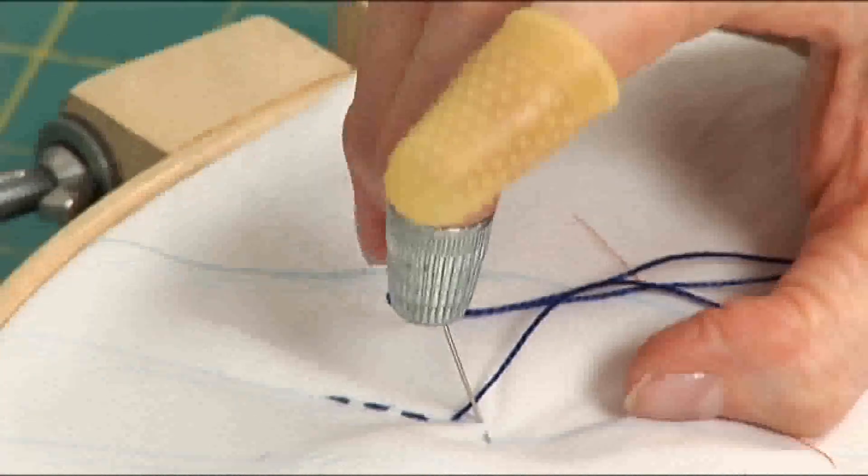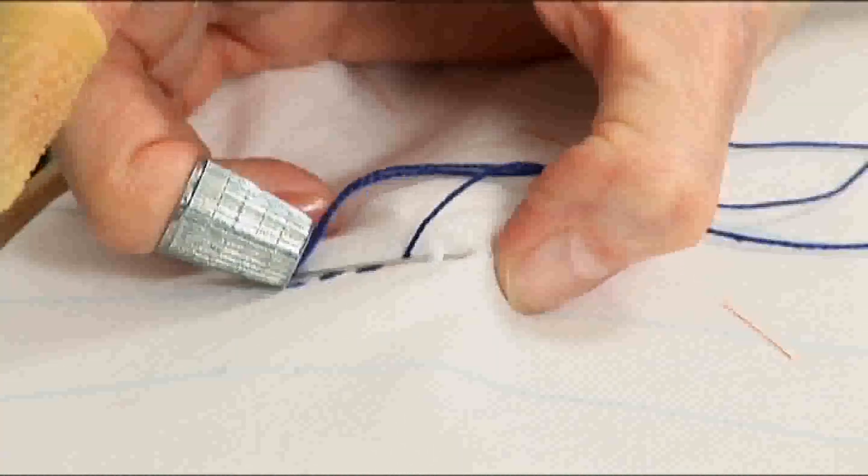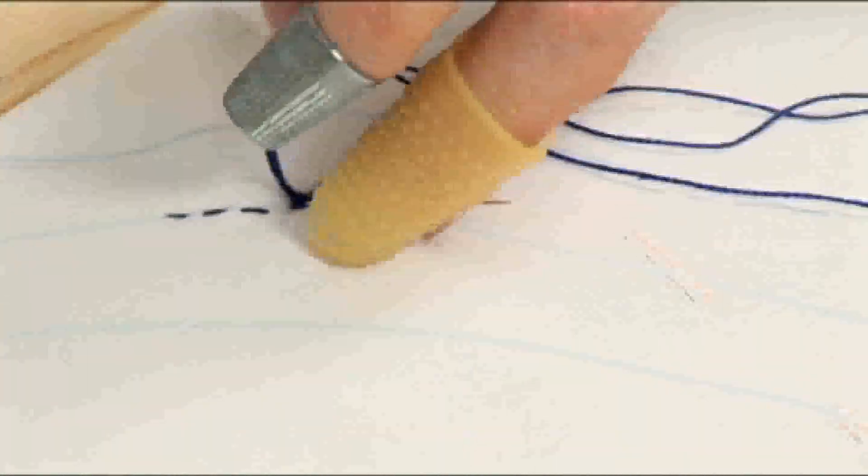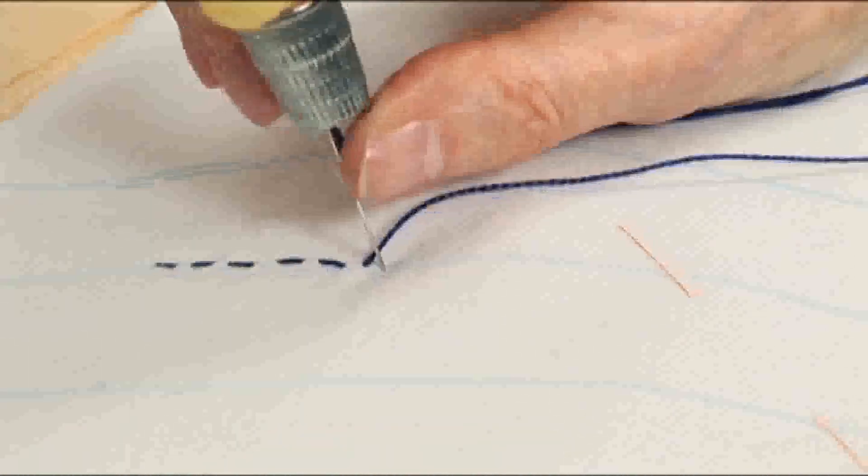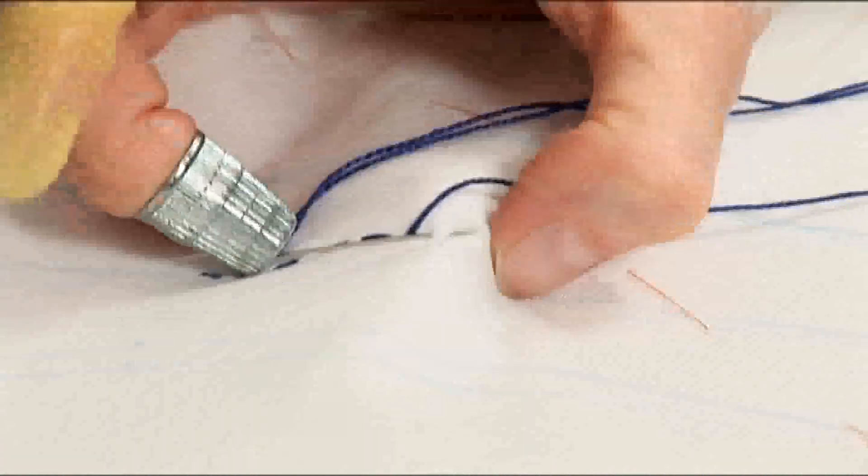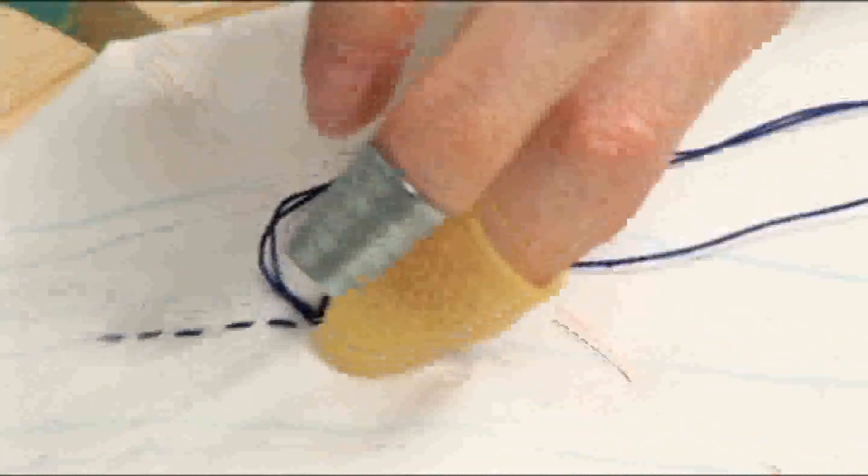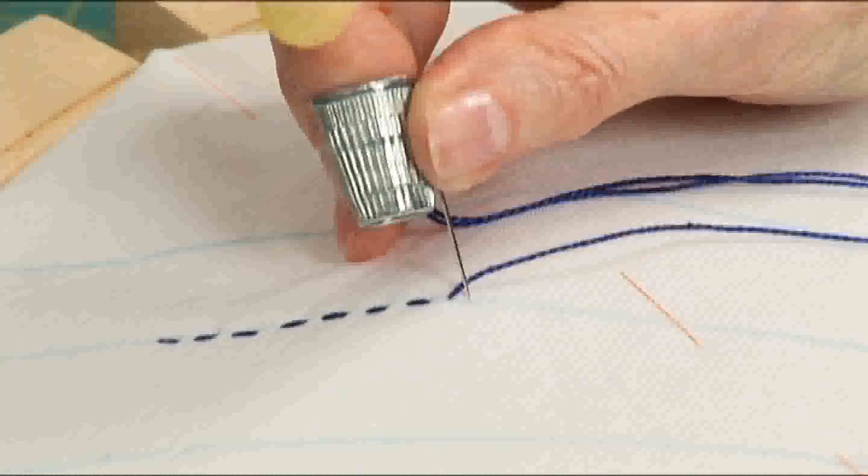And so I'm going to continue rocking the needle. Up and down. And the goal here is for straight and even stitches. I get maybe three or four stitches showing on top.